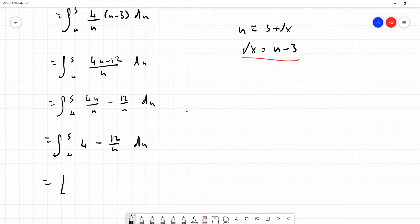We're putting our square brackets up because we're going to be putting in our limits of our interval shortly. We're going to have 4 integrates to 4u, and minus 12 over u integrates to minus 12 log u. And that's just a standard integral. And we integrate these between the values of 5 and 4.